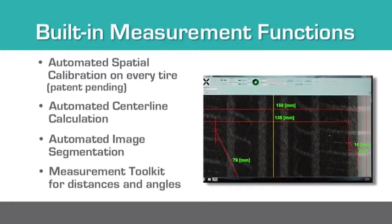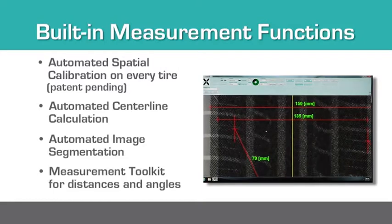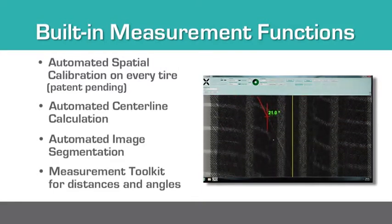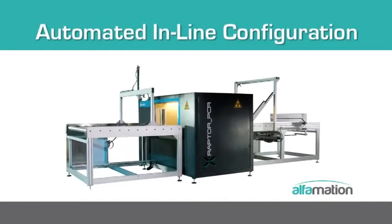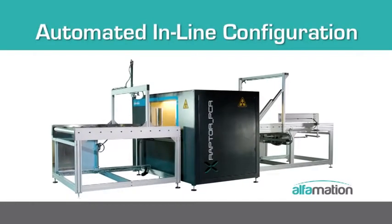The X-Raptor is more than a simple x-ray vision inspection system. Using built-in measurement functions, it produces quantitative results that users can easily understand. The machine can be configured for both inline use that is fully integrated in the manufacturing line, as well as offline use for batch testing.